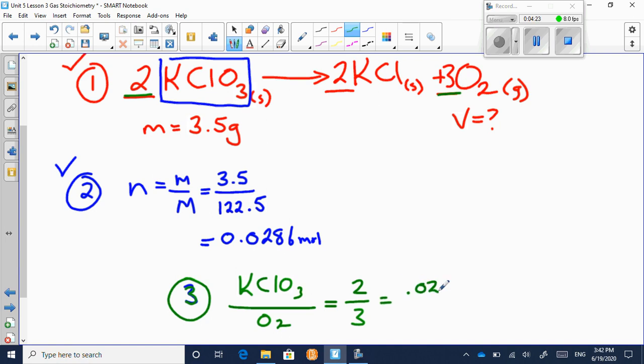So it's 0.0286 to X. Cross multiply, solve for X, and you get an X there of three times 0.0286 divided by 2 equals 0.0429 moles.